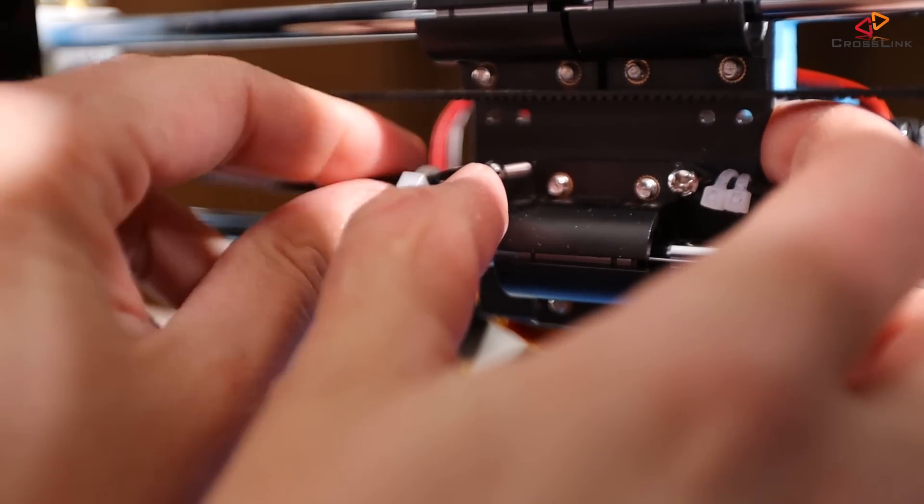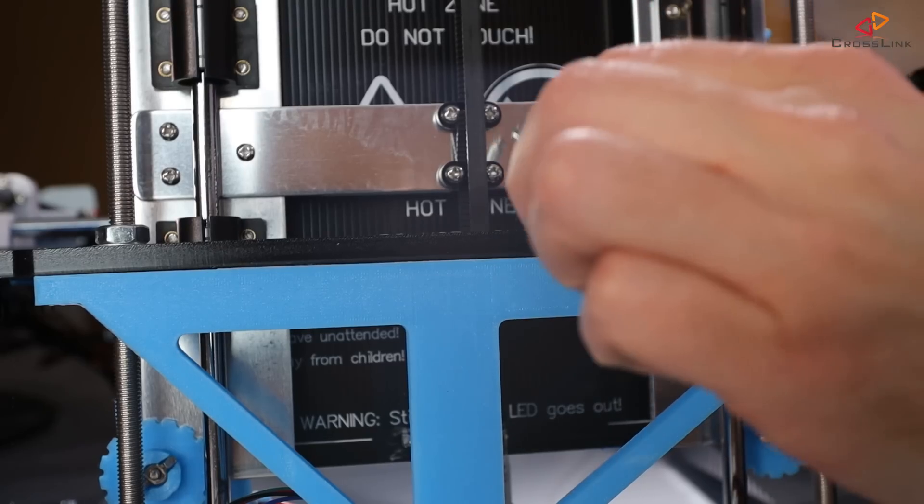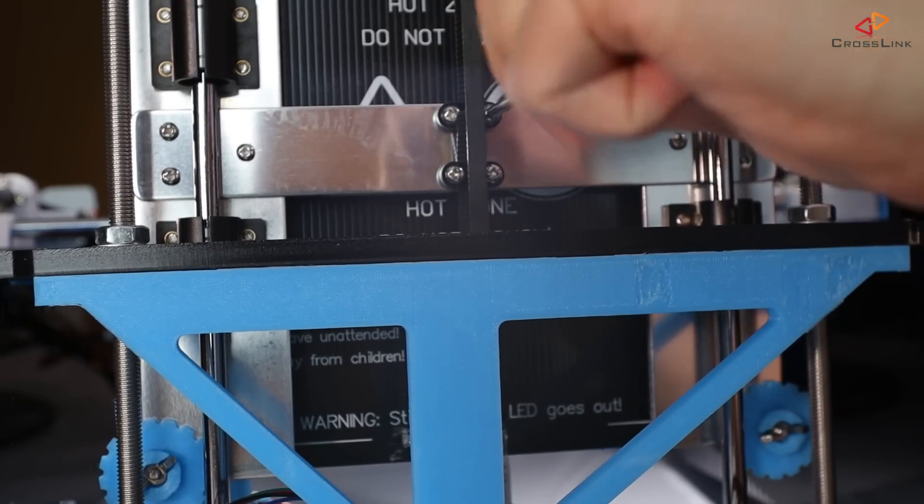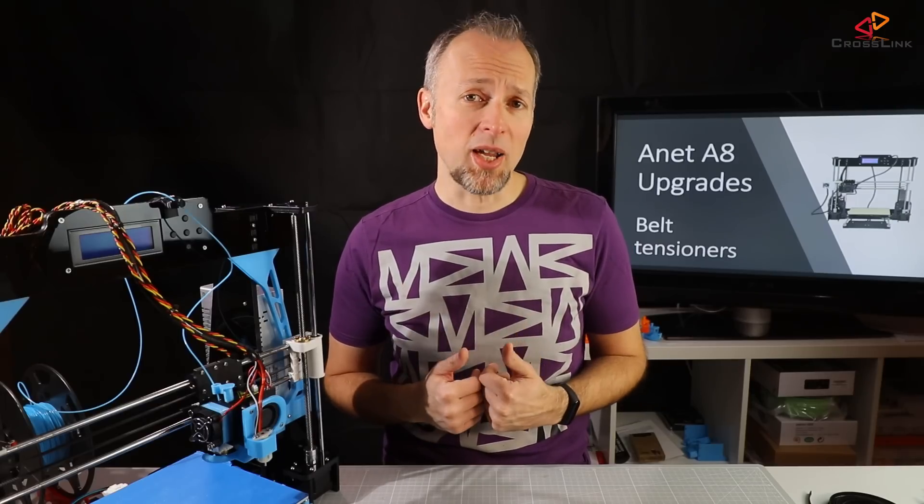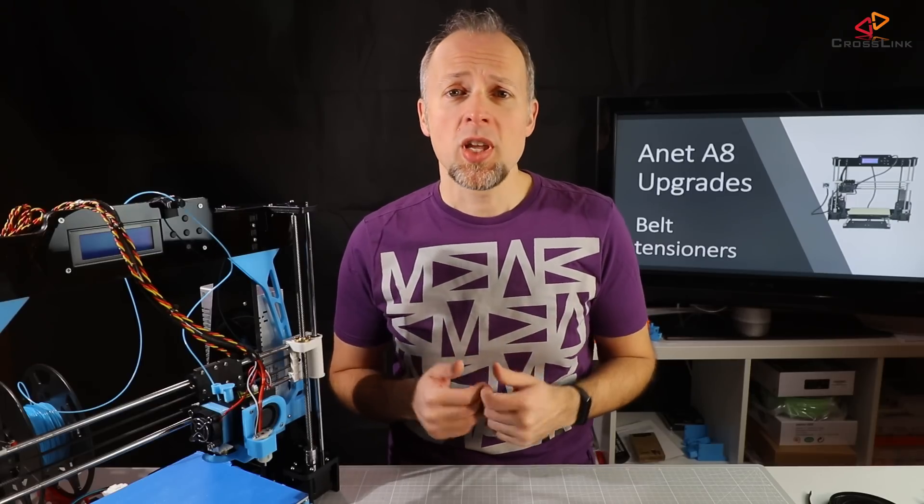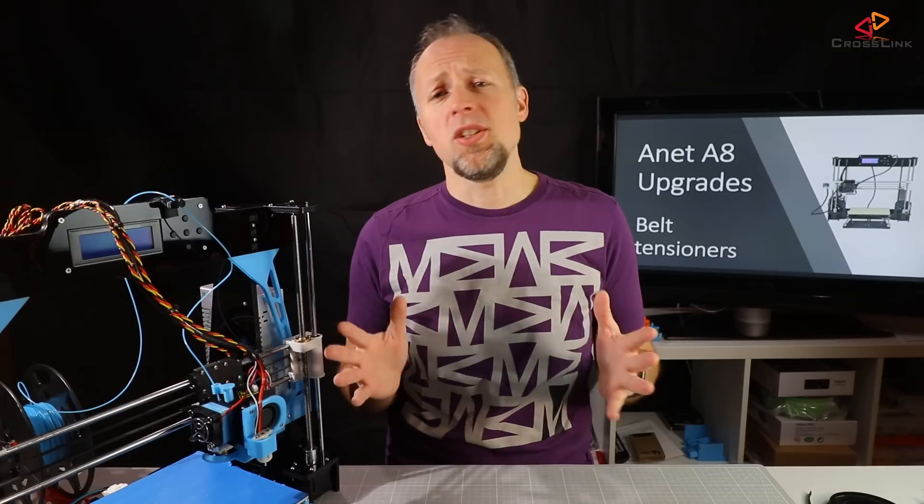For the Y axis it's also not easier. We need to release one of the belt holders at the bottom of the bed carriage, tighten the belt by pulling at one end, and then re-tighten the belt holder at the same time. That's doable of course, however it could be easier, much easier.